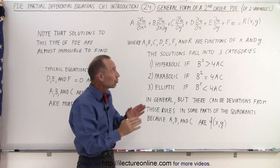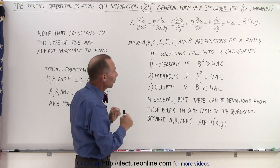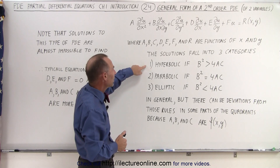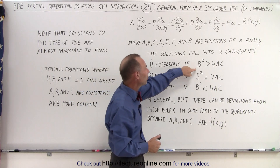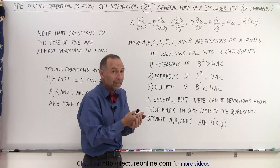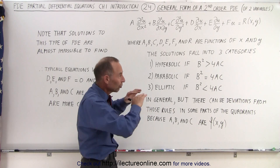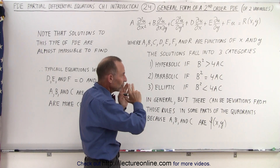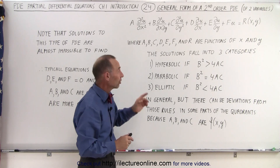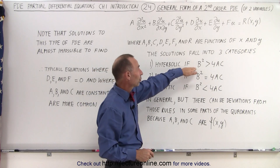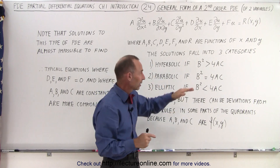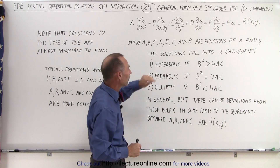In general, when we try to solve something like this, we'll have solutions that fall into three major categories. It can be a hyperbolic solution if B squared is greater than 4AC. You should recognize that as something we use in quadratic equations, so there's a relationship between solving a quadratic equation and solving partial differential equations. When the quantity inside the radical is positive, we have a hyperbolic solution.